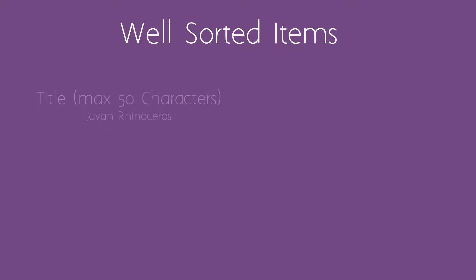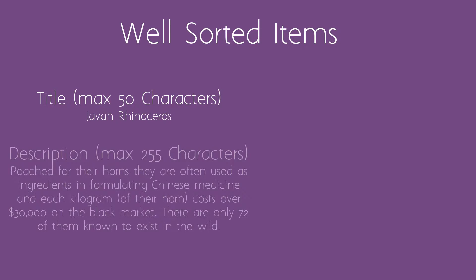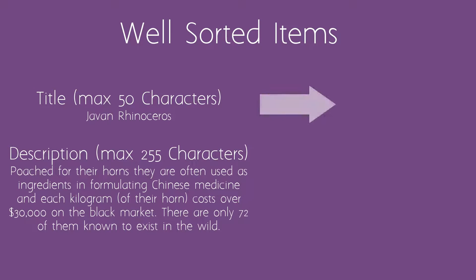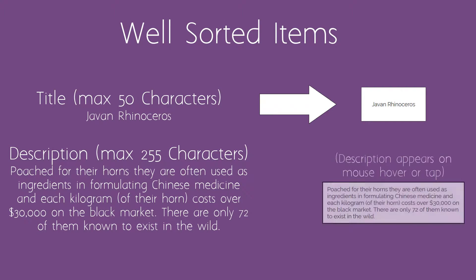Each item in Well Sorted consists of a short title and a longer description, which should explain the title. Together, this title and description forms a single item, or card, which can be sorted with other cards into groups of similar meanings.